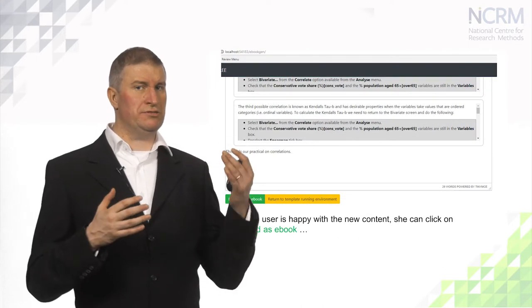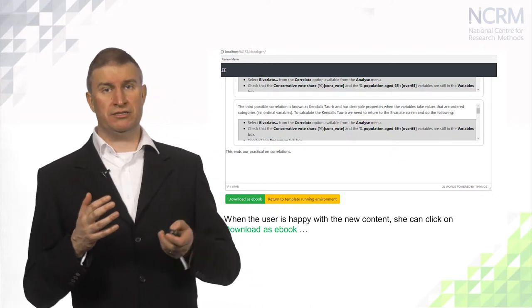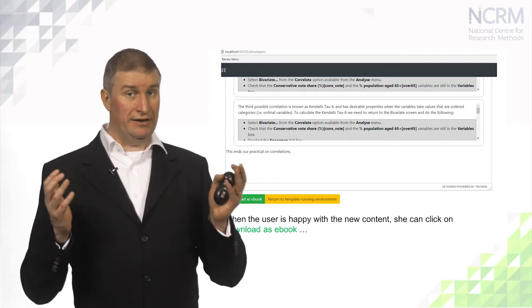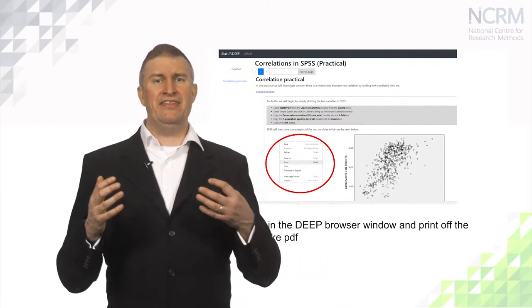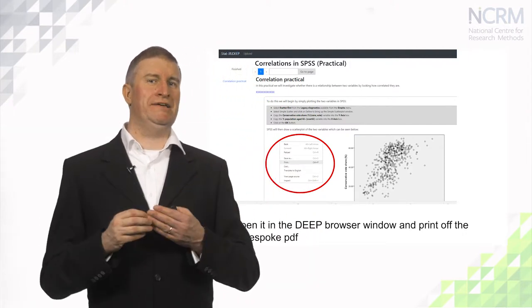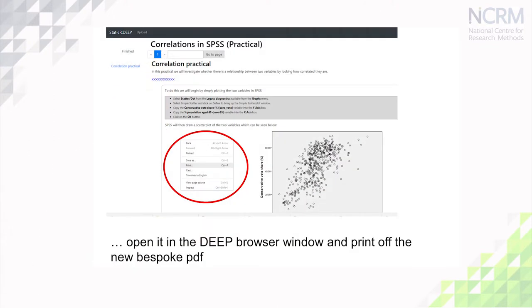When the user is happy with the content, they click the 'download as ebook' button at the bottom of the screen and an ebook is created. This allows them to save the ebook as a file, then move to Stature's ebook interface — the second of Stature's interfaces — where they can see the browser shown behind me. Clicking the right mouse button allows us to print what we see on screen as a PDF, and we have a hard copy of our new practical.